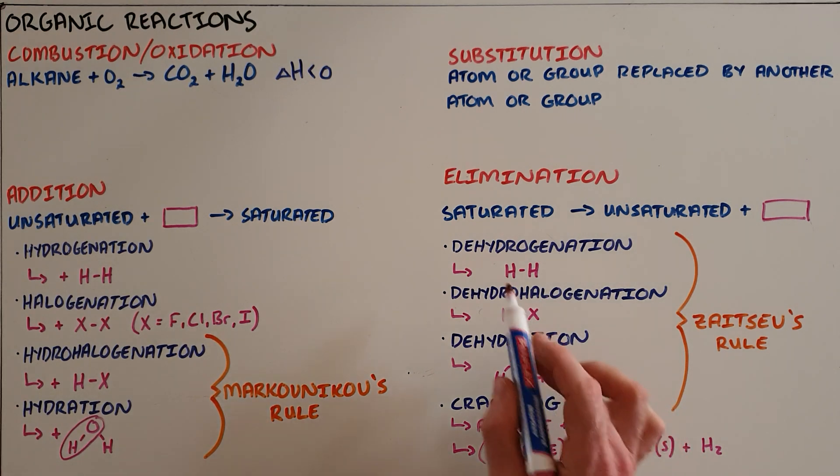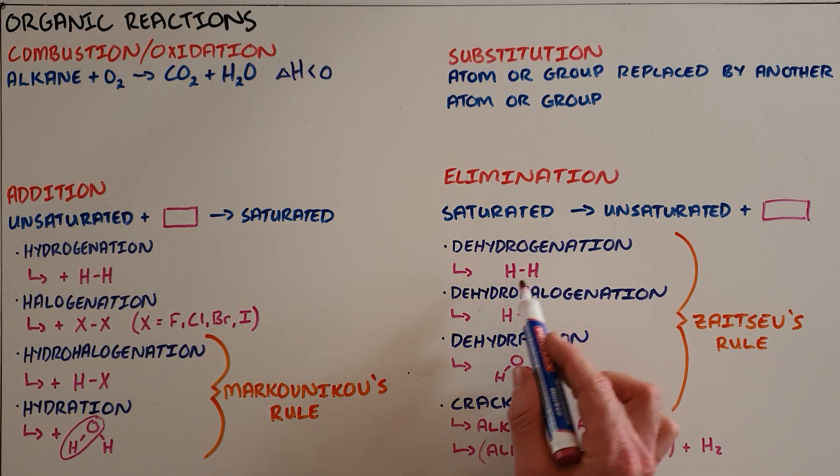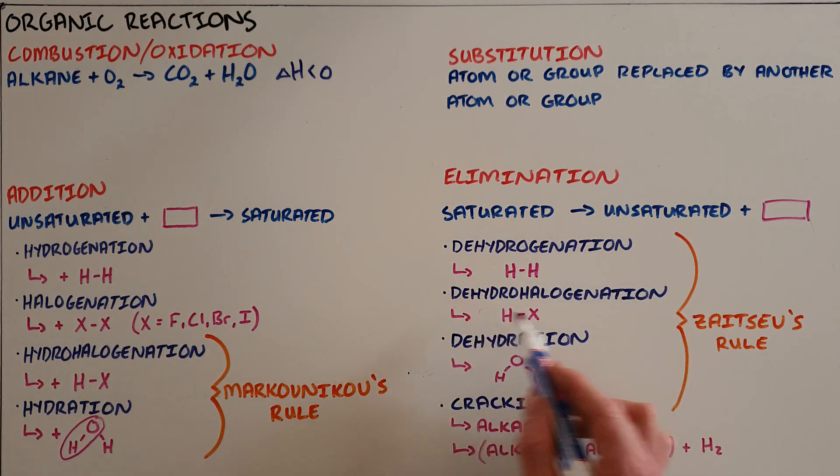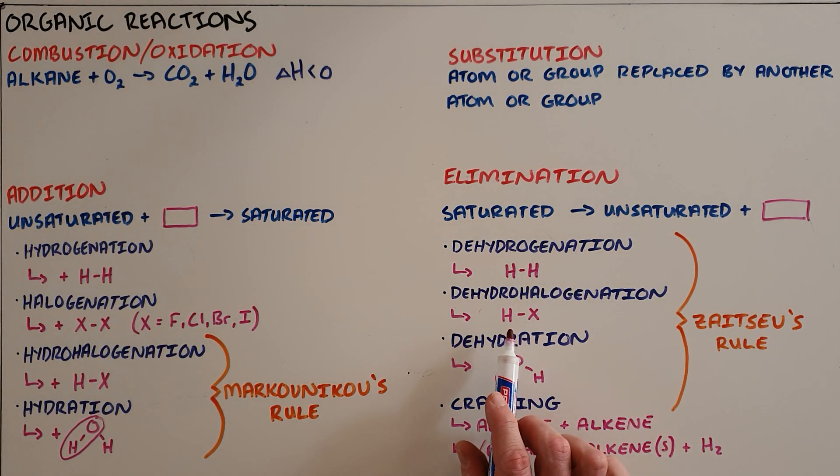The first type being dehydrogenation, which is the removal of a hydrogen molecule; dehydrohalogenation, which is the removal of a hydrogen halide; and dehydration, which is the removal of a water molecule. And finally cracking, which is essentially when a long-chain alkane is broken into either an alkane and an alkene, or an alkane, a number of alkenes, and a hydrogen molecule. These reactions are governed by Zaitsev's rule to determine where the hydrogen ion is removed from the organic molecule.